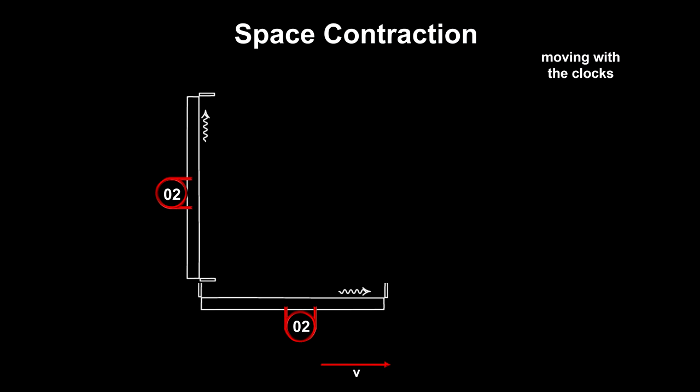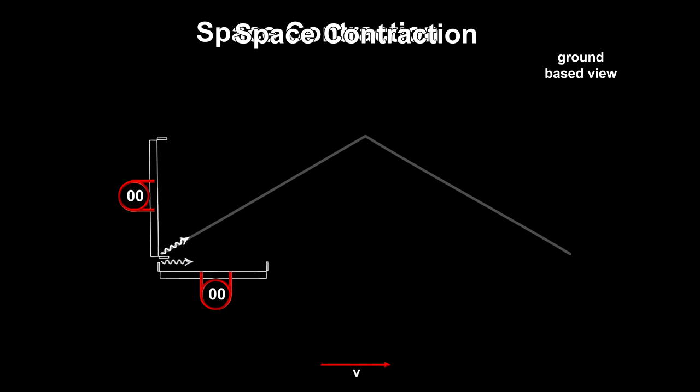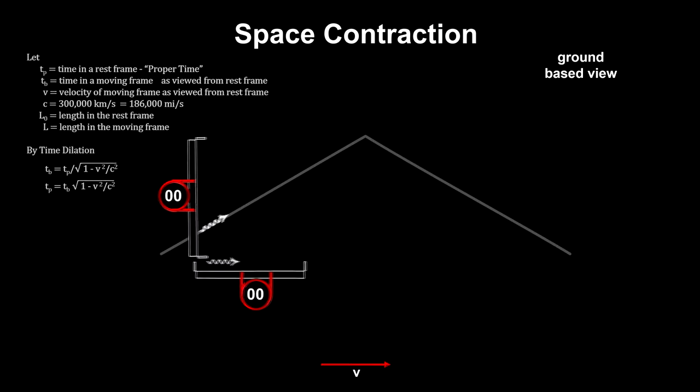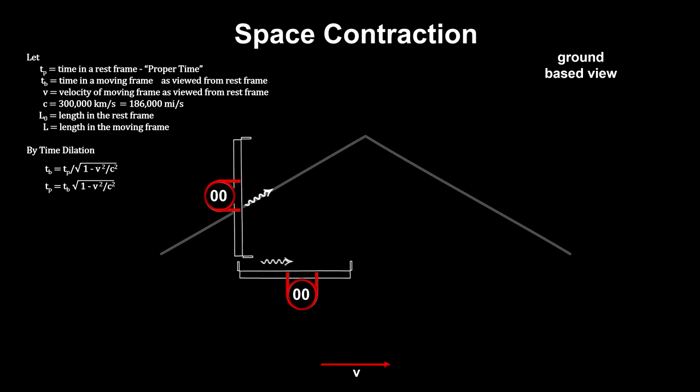They tick at the same rate because they are identical clocks at rest together. They will also tick at the same rate for an observer on the ground, only they will tick slower as we have already established.